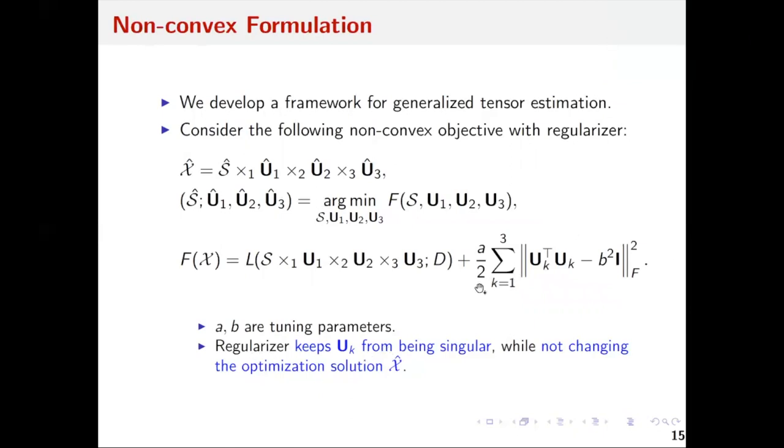Here a and b are tuning parameters to be decided later. These regularizers will help keep U from being singular and guarantee that our procedure will work better. By algebraic calculation we can check that adding this regularizer will not change the optimization solution.